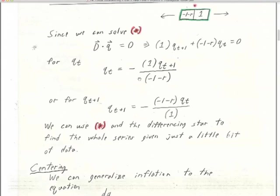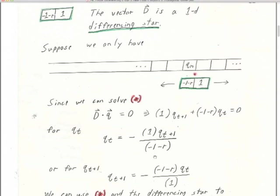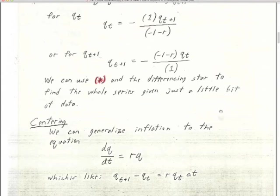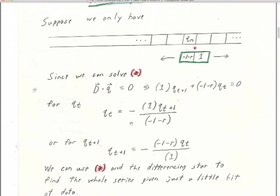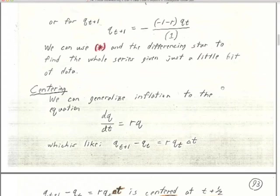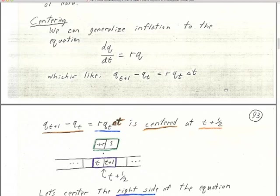Thinking about downward continuation: what's our known point? That's the surface data. We have the surface data for all t, and we want to downward continue it to all z. We'll use some kind of differencing star, apply it, and calculate the solution for every time step. It's a numerical procedure, and we'll have the same thing for the solutions of our downward continuation.